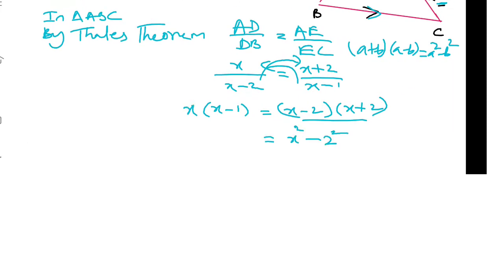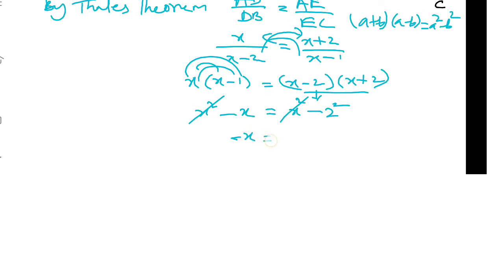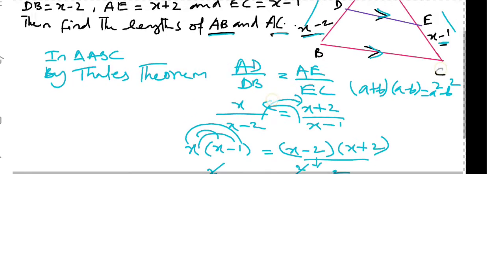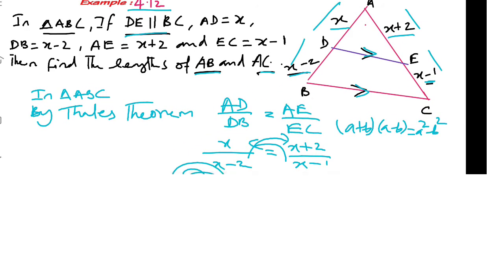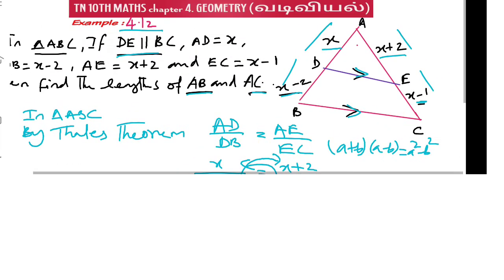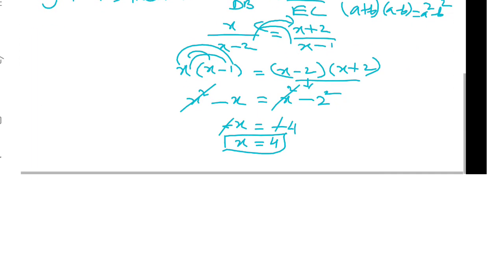So this is x square minus 2 square. Here x multiply, x into x is x square, x into minus 1 is minus x. Two sides have x square, so x minus x equals x minus 2, which gives x equals 4.